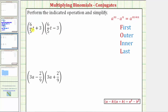We first distribute six-fifths t into the second binomial, which gives us two products. Then we distribute the positive three into the second binomial, which gives us two more products. The product of two binomials will always have four products. Some textbooks use the acronym FOIL, where the product of the first, outer, inner, and last terms gives these four products. But I think it's easier to remember repeated distribution.